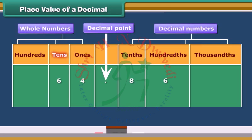Whereas numbers to the left of the decimal point are whole numbers. The place values are ones, tens, hundreds and so on. Therefore, we read this number as 64 and 86 hundredths.